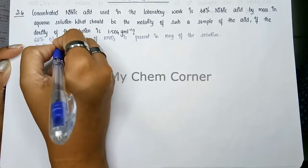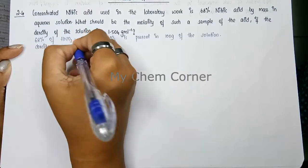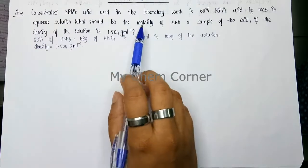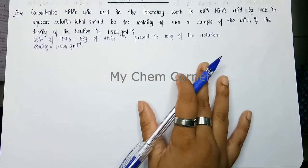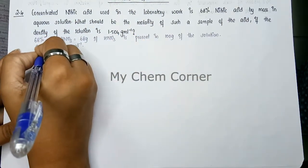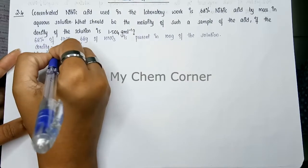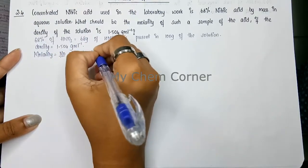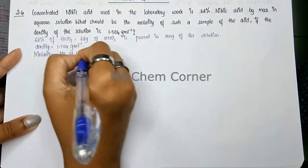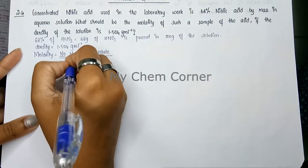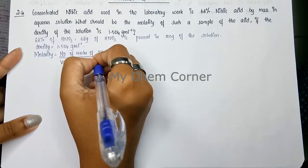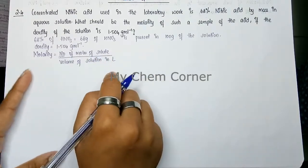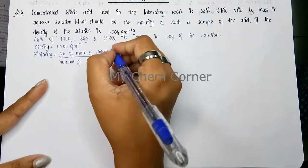The density is given as 1.504 gram per mL. They want us to calculate the molarity. The formula for molarity is: number of moles of solute divided by volume of solution in liters. The solute here is HNO3.